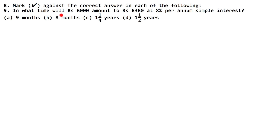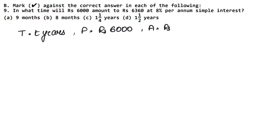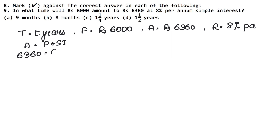Next question: In what time will ₹6000 become ₹6360 at 8% per annum simple interest? Time is unknown, so let time be T years. Principal is ₹6000, amount is ₹6360, rate is 8% per annum. Using Amount = Principal + Simple Interest: Simple Interest = 6360 minus 6000 = ₹360.